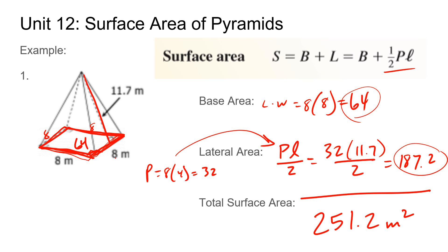That's pretty much it. If the base shape changes, just use a different formula for your base depending on the shape. For the lateral area of a regular pyramid, take the perimeter of your base, multiply by the slant height, divide by two, and then add everything together.